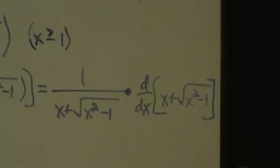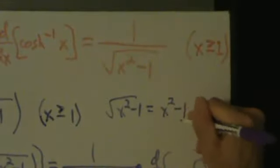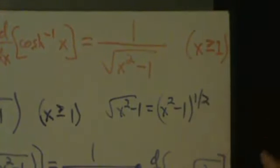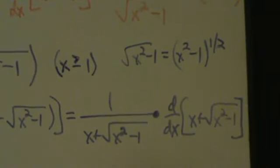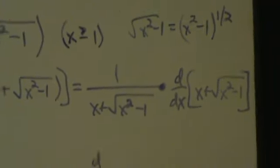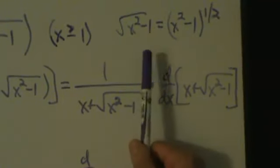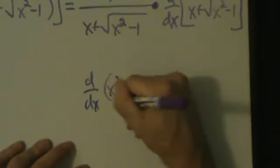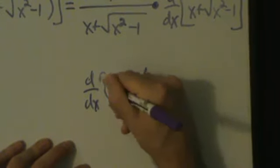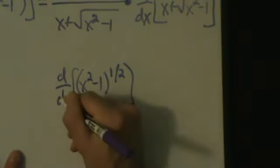Root x squared minus 1 is the same as x squared minus 1 to the 1/2. To take its derivative, we'll use the chain rule and the power rule. We want d/dx of root x squared minus 1, which is d/dx of x squared minus 1 to the 1/2. We'll go through this quickly since it's the same as the last video, but now with minus 1 instead of plus 1 — though that doesn't change anything.